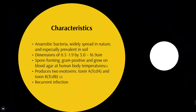C. difficile is an anaerobic bacteria. It is found in nature and is especially prevalent in soil. It has dimensions of 0.5 to 2 by 3 to 17 micrometers. It is a Gram-positive bacteria and it grows best at human body temperature in the absence of oxygen.